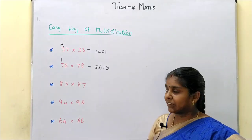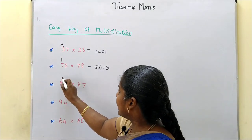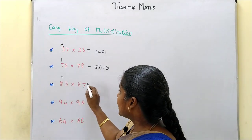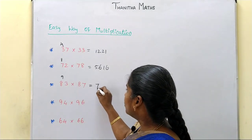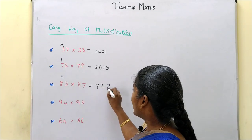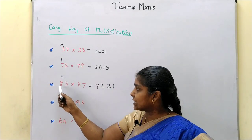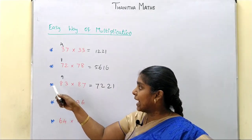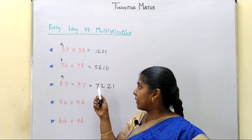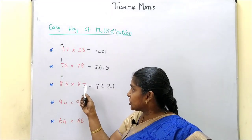83 and 87. 8 is 9. 9×8 is 72. 7×3 is 21. That's the answer. If the 10's digit, the number is 6.